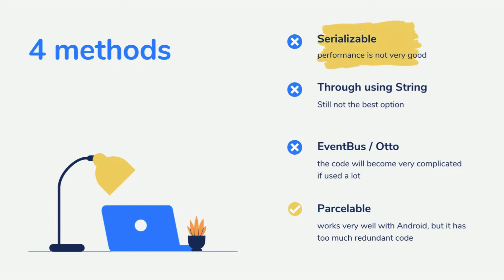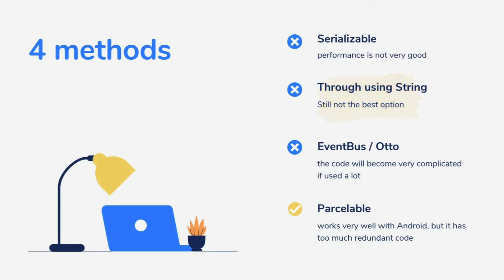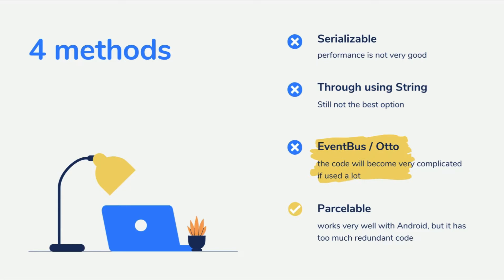Serializable is easy to set up, but performance is not very good for Android. You can pass the object as a string, which is relatively easy when something like JSON is used in your project — still not the best option. Bus libraries like event bus or auto are easy to use and have decent performance, but the code will become very complicated if used a lot.